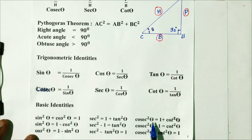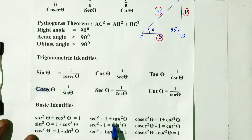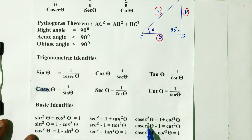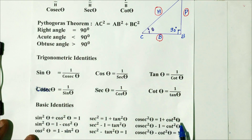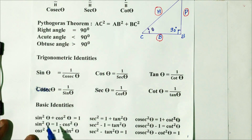sec²θ = 1 + tan²θ. cosec²θ = 1 + cot²θ. Therefore, we have these basic identities.